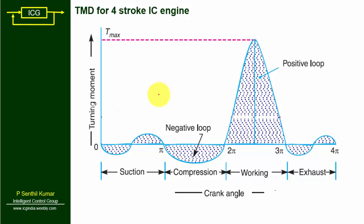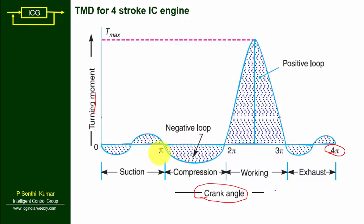This is the turning moment diagram for a four-stroke IC engine. The x-axis represents crank angle and the y-axis represents turning moment. The maximum value of crank angle is 4π, which means four strokes, each stroke taking an angle of π. So totally it has four strokes: suction, compression, working, and exhaust. This diagram clearly shows that there is a fluctuation of energy on each stroke.